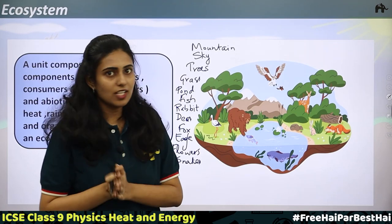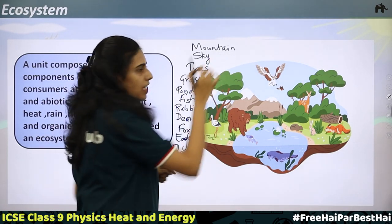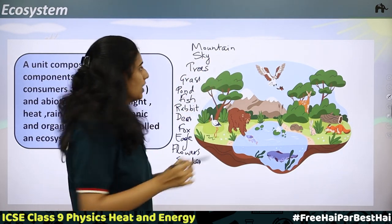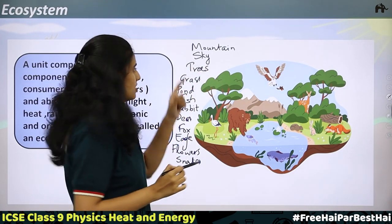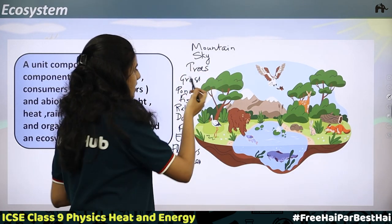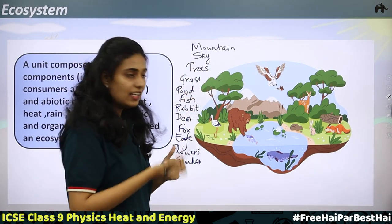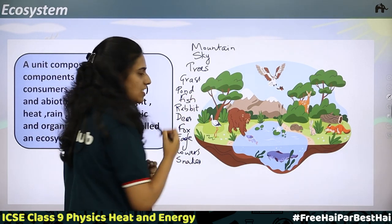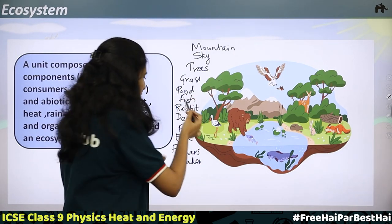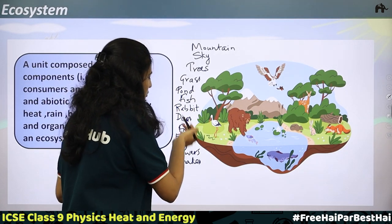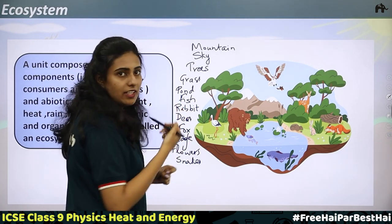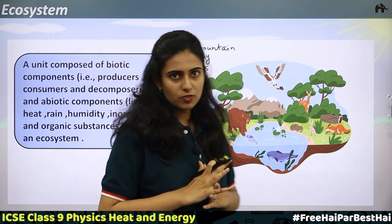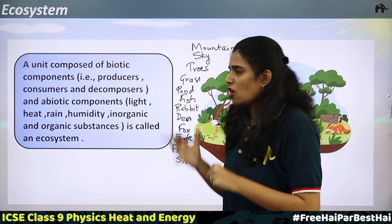Of these, some are living and some are non-living. Mountain is non-living, sky is non-living, pond is non-living. Trees are living, grass is living, fish is living, rabbit is living, deer is living, fox is living, eagle is living, flowers are living, and snakes are also living. So some are living and some are non-living.